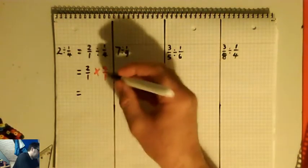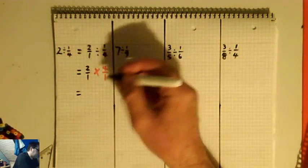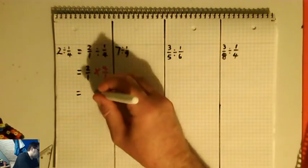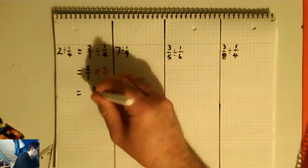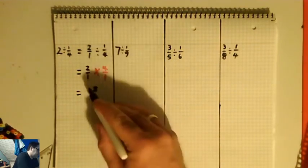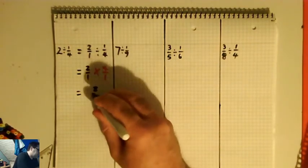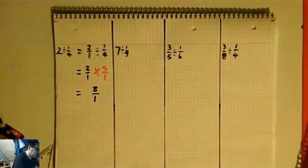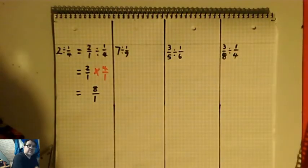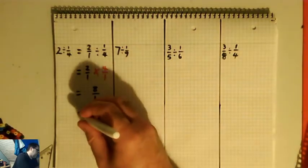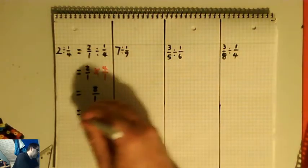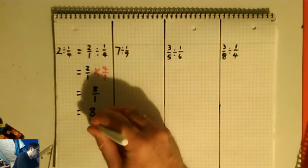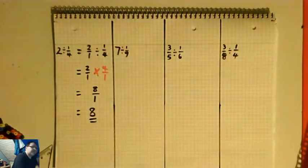Then you just do top times top: two times four is eight. Bottom times bottom: one times one is one. So we've got eight over one, which is just eight divided by one, which is just eight.